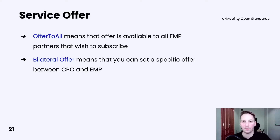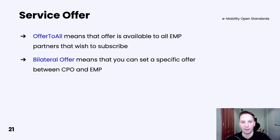The first one means that the offer is available to all EMP partners that wish to subscribe to it. In other words, any EMP that wishes to subscribe must agree on common terms defined by the CPO. The second one is a bilateral offer, meaning you can set a specific offer between one EMP and one CPO. That's very useful if you have an individual contract between those two and still want to use Hubject as your main communication platform.